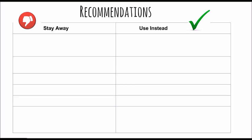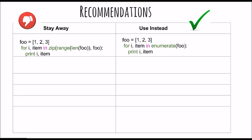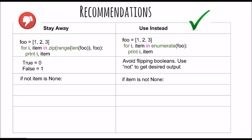Let's go through some good recommendations. Consider this code: 'foo' is a list and to iterate over the list you're using zip, range, and length — you should use enumerate instead. It's always good to memorize built-in Python techniques for efficient coding, which makes your code easier to read. Flipping booleans is not a good idea; use 'not True' or 'not False'. Use the 'is not' operator rather than 'not is' — while both expressions are functionally identical, the former is more readable. If you have nothing to return, just return None.